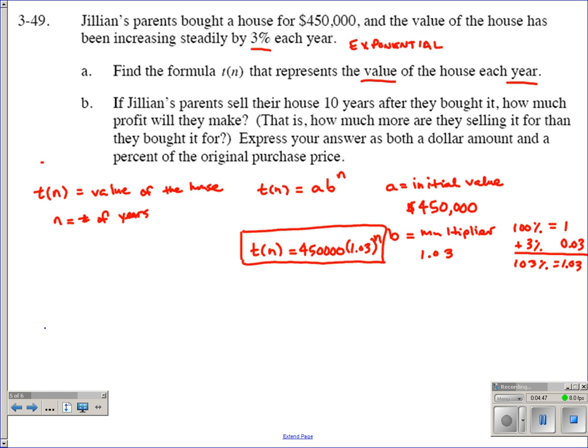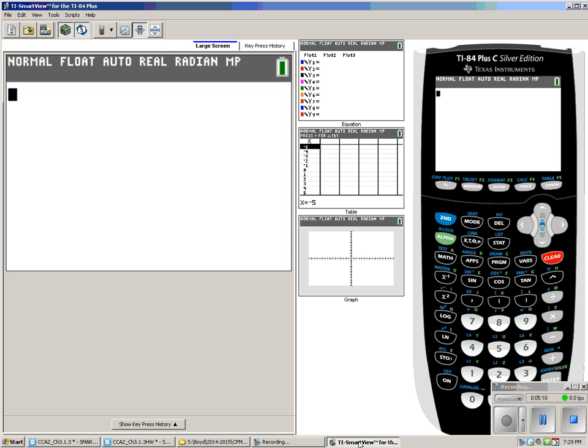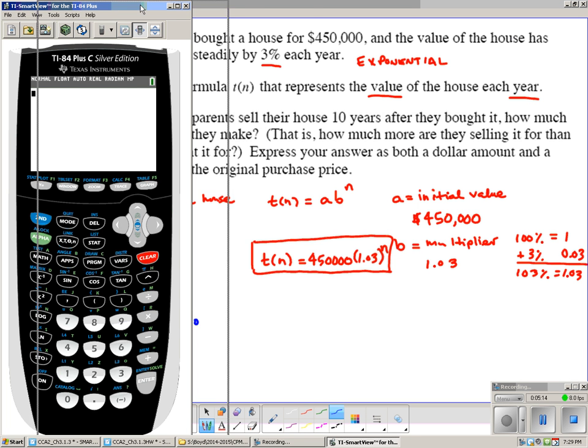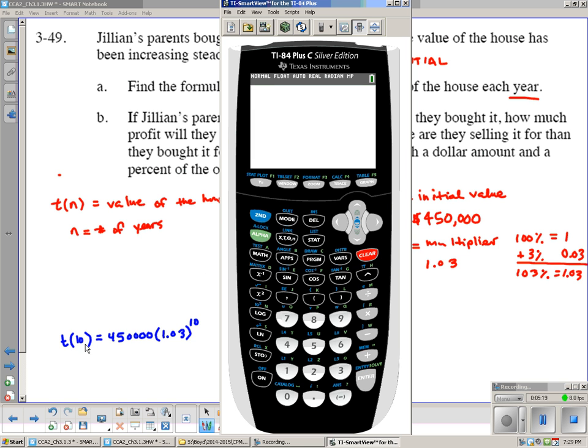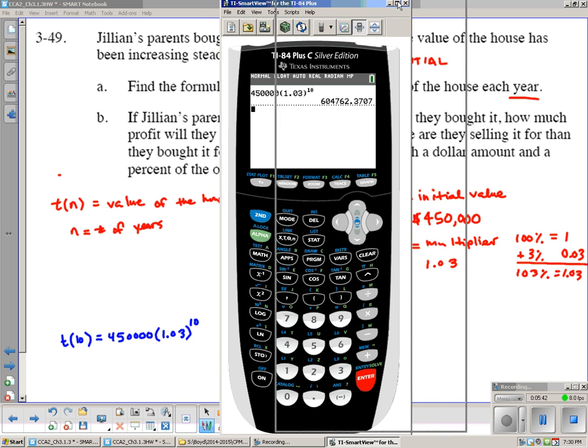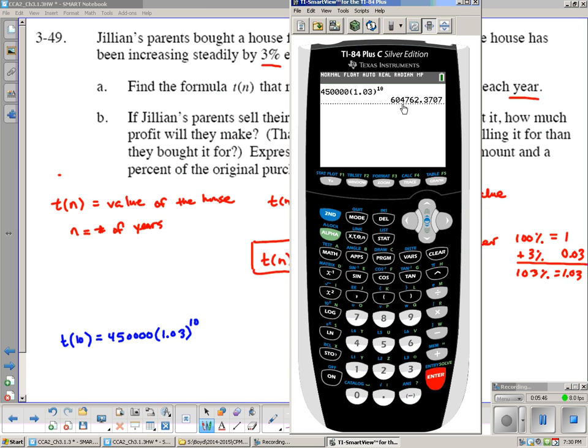If it was 10 years after they bought it, the value of our house would be T(10) equals 450,000 times 1.03 raised to the 10th power. Let's grab our calculator and calculate the value. We're going to have 450,000 times 1.03 raised to the power of 10. The value we get is $604,762.37.